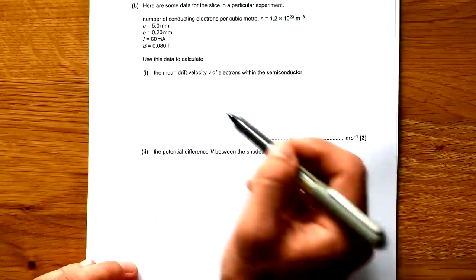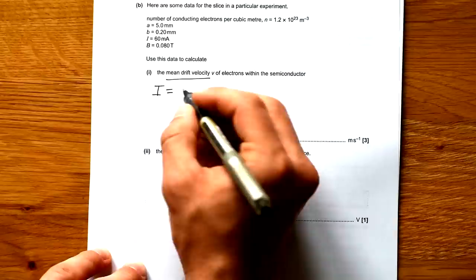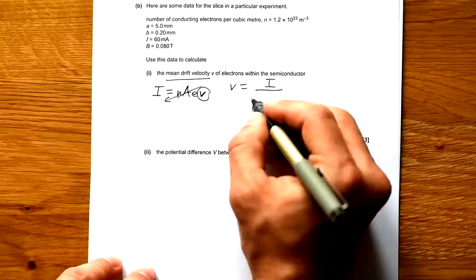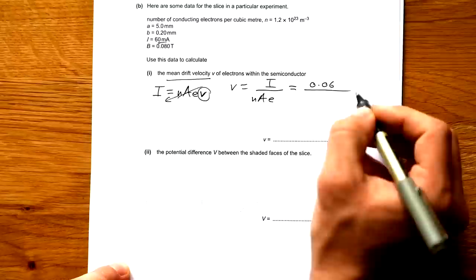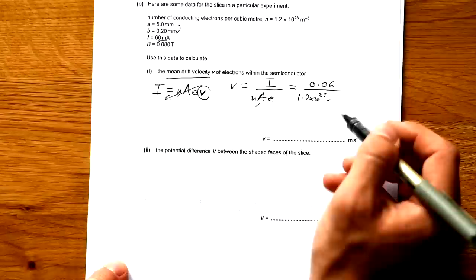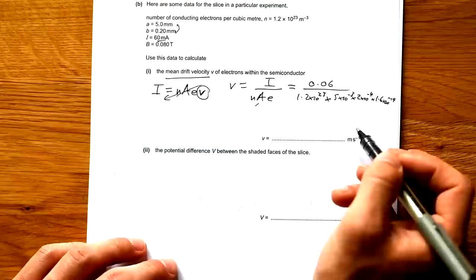Here are some data for the slice in a particular experiment. Number of conducting electrons per cubic meter is that, and we have our dimensions and current and flux density there. Use this data to calculate the mean drift velocity of electrons within the semiconductor. So we know that current in relation to drift velocity is I equals NAEV, but we're looking for V. So we need to chuck everything over the other side. So we end up with I divided by NAE. So that's just going to be our current, 60 milliamps, so that's 0.06 divided by N, which is the density of our electrons at 1.2 times 10 to the 23 times the area, which is these two here, 5 times 10 to the minus 3 times 2 times 10 to the minus 4, and then finally times the charge of each electron.